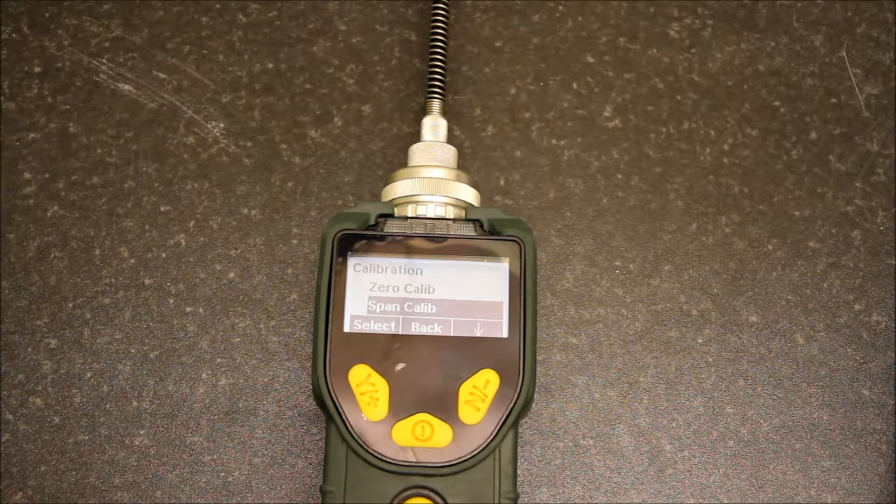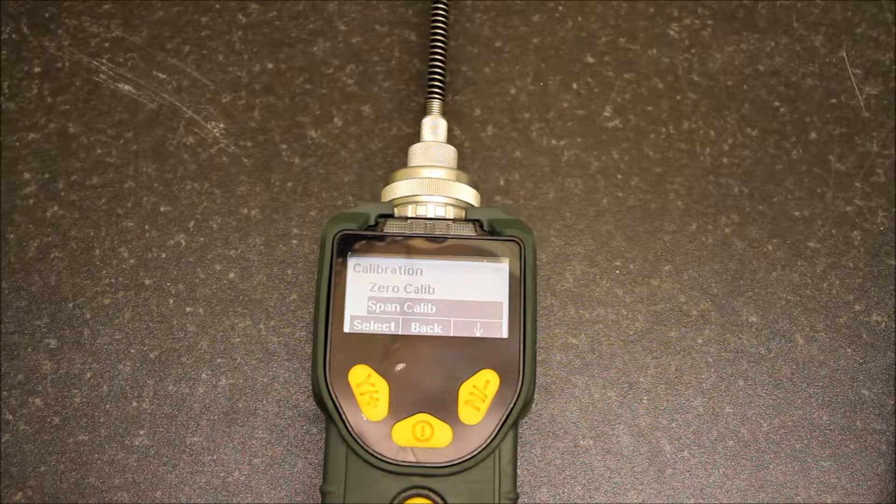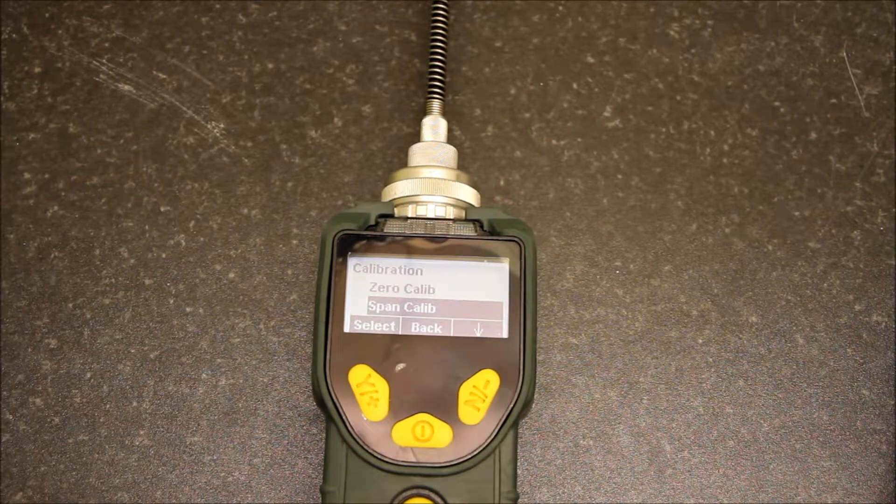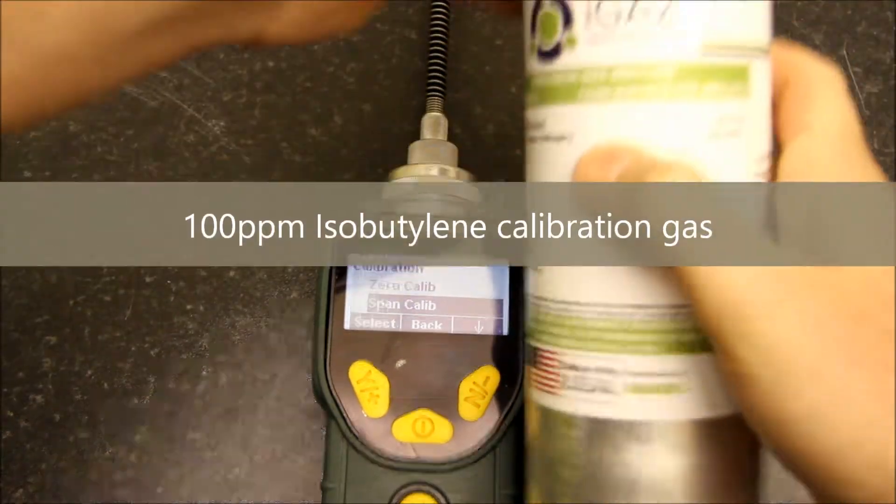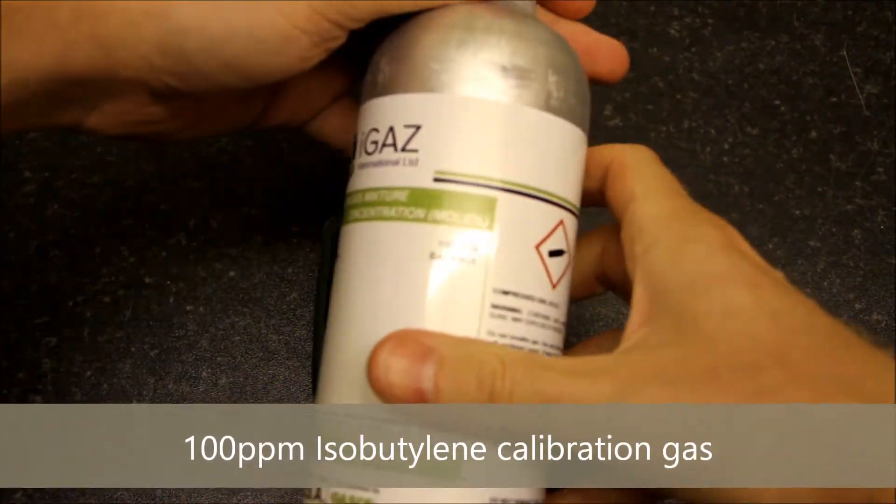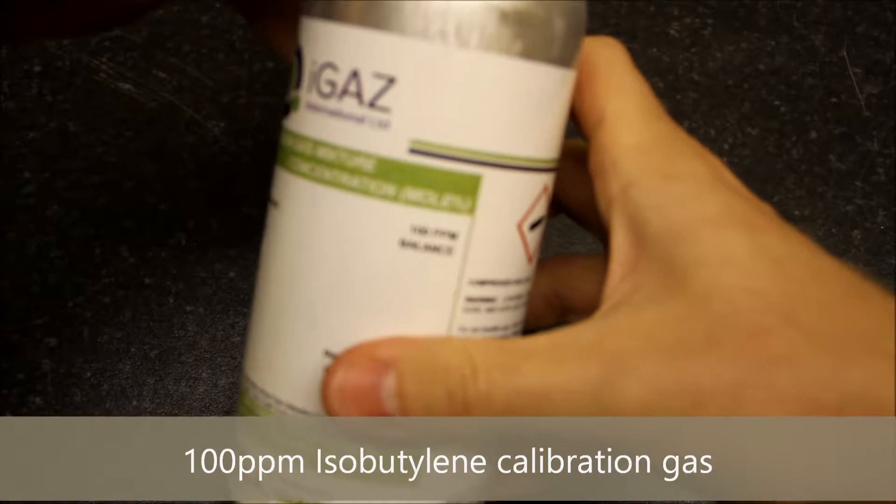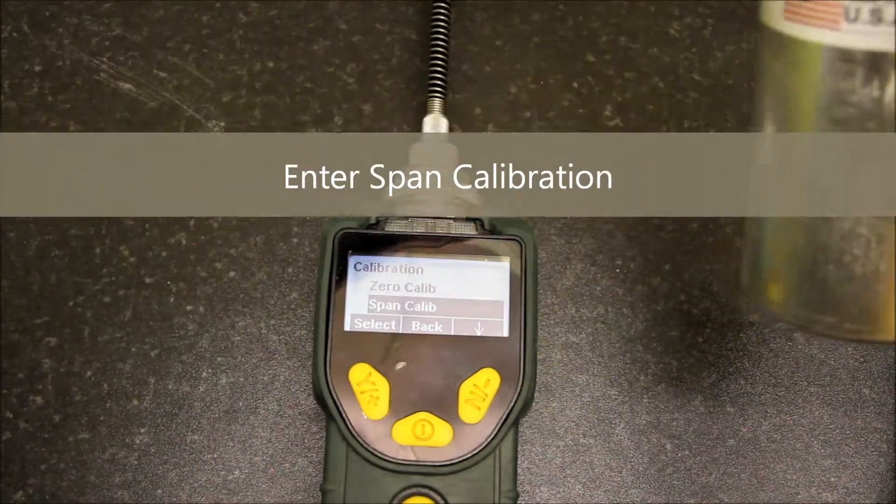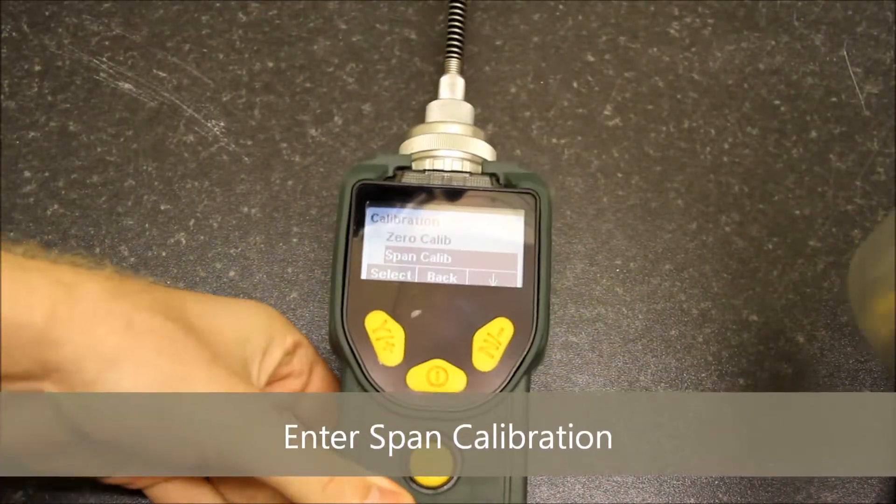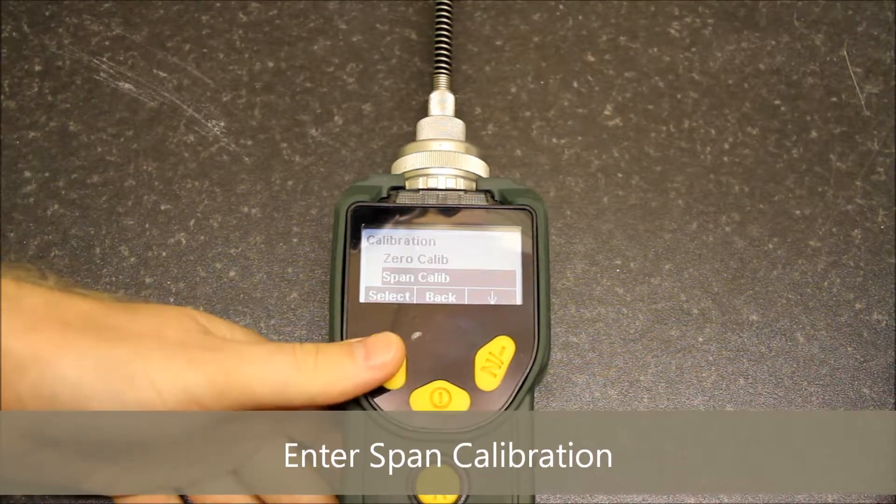The unit is now zeroed, reading 0.0 ppm, and it's now gone into span calibration next in the list. We're going to be using 100 ppm isobutylene gas here. So 100 ppm isobutylene gas, and we are going to drop into the span calibration.